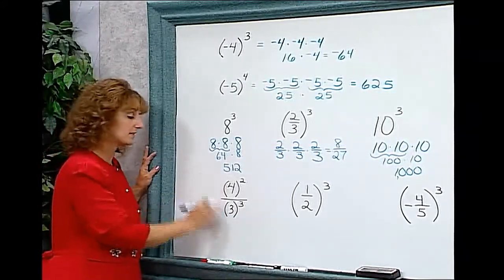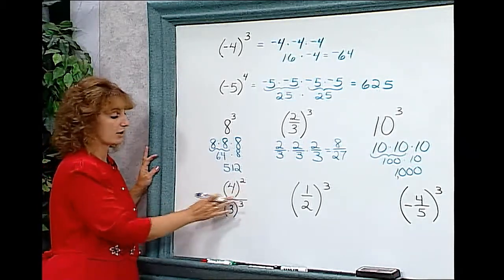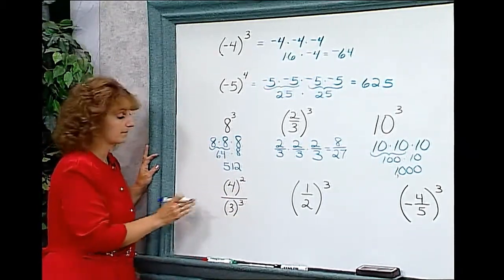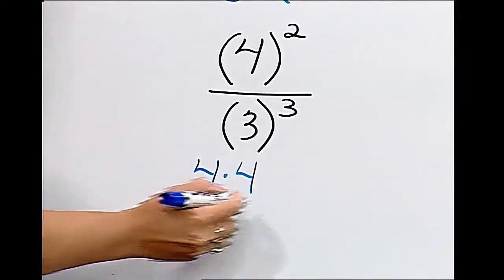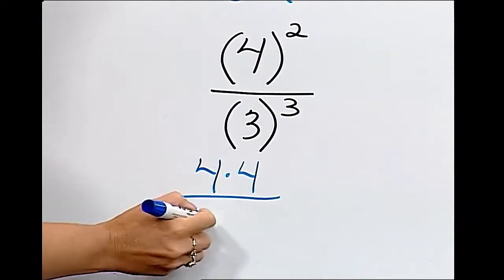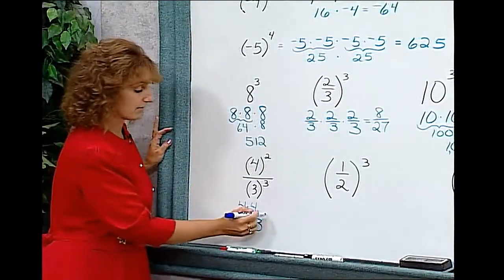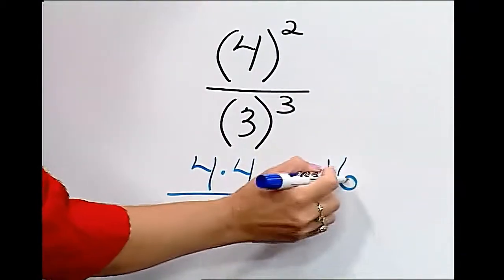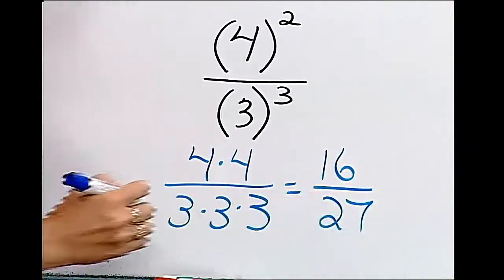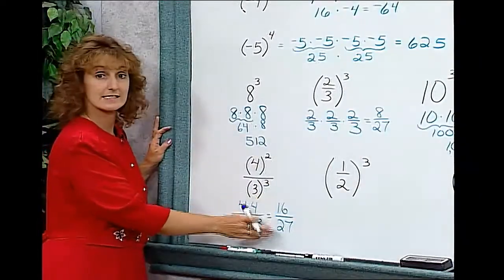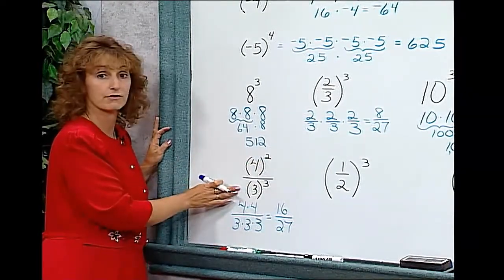We have a fraction, but the entire fraction is not in parentheses. We have 4 to the second over 3 to the third. This means we're going to take 4 times 4 in the numerator, and 3 times 3 times 3 in the denominator. 4 times 4 is 16, and 3 times 3 times 3 is 27. So we get 16 over 27 as our answer to 4 to the second over 3 to the third.